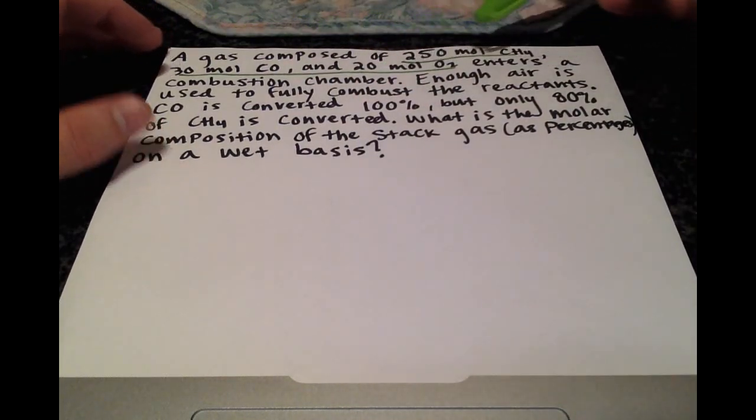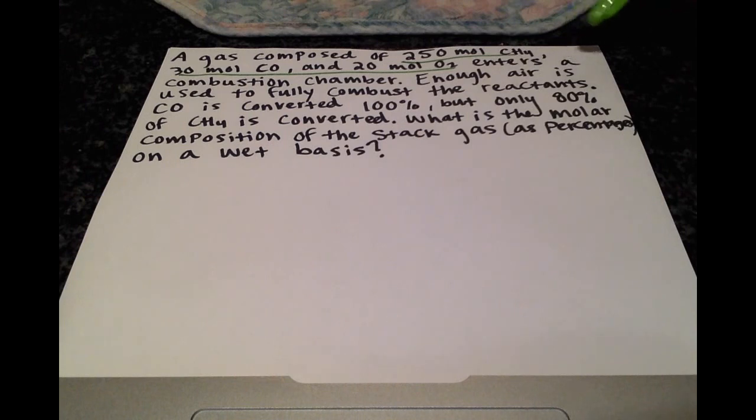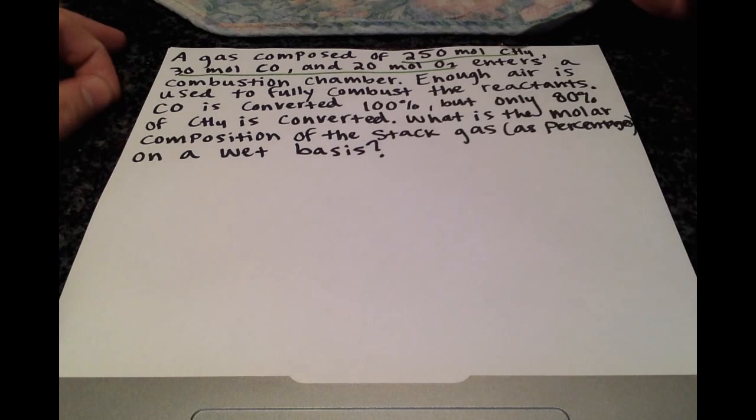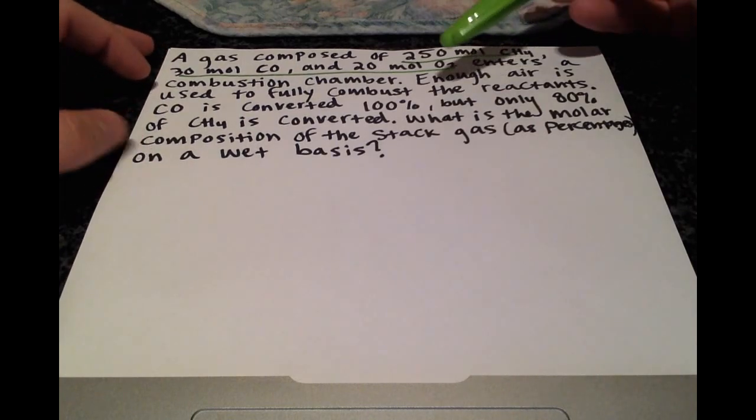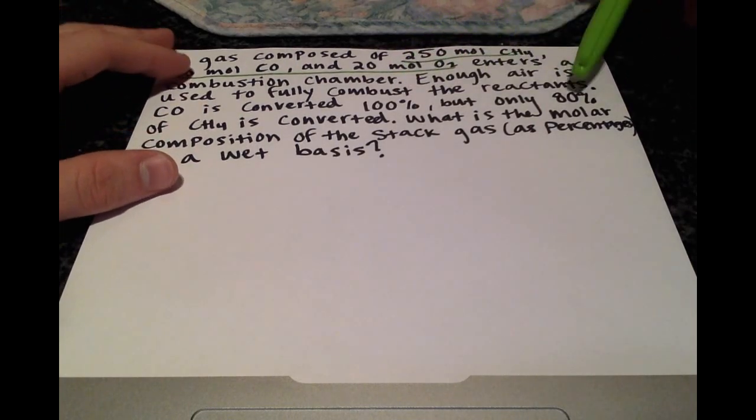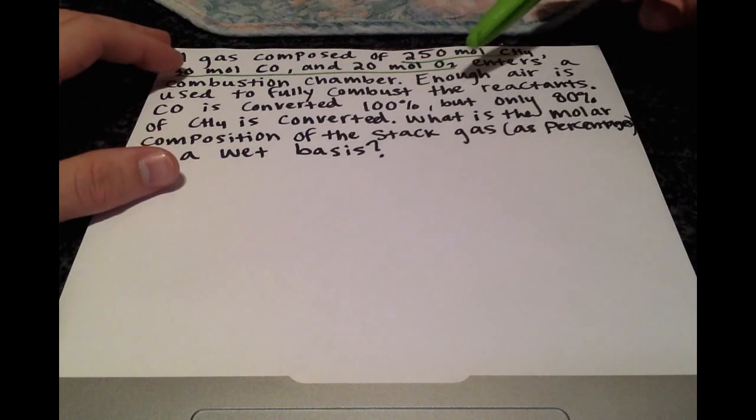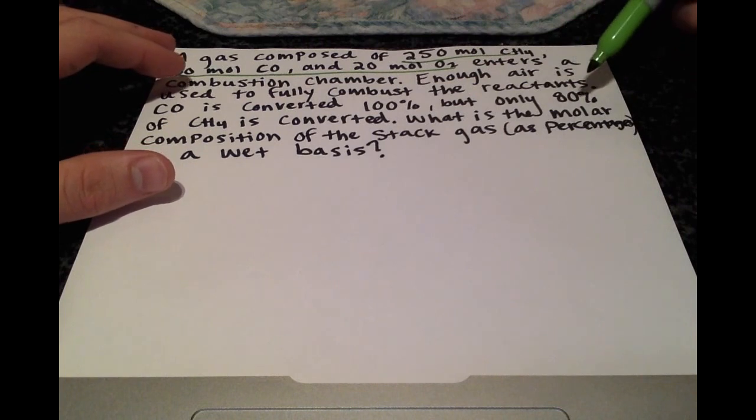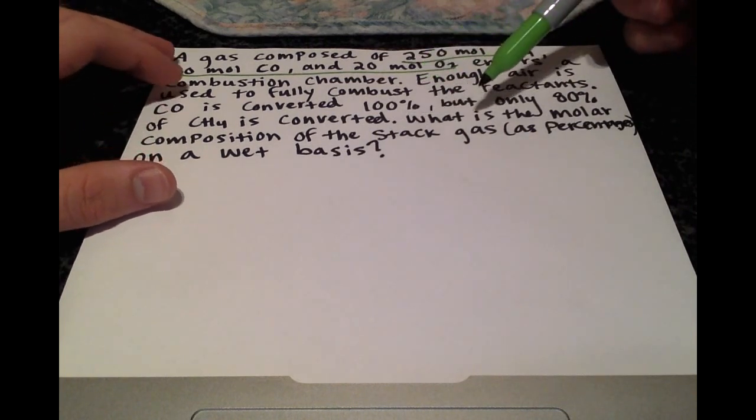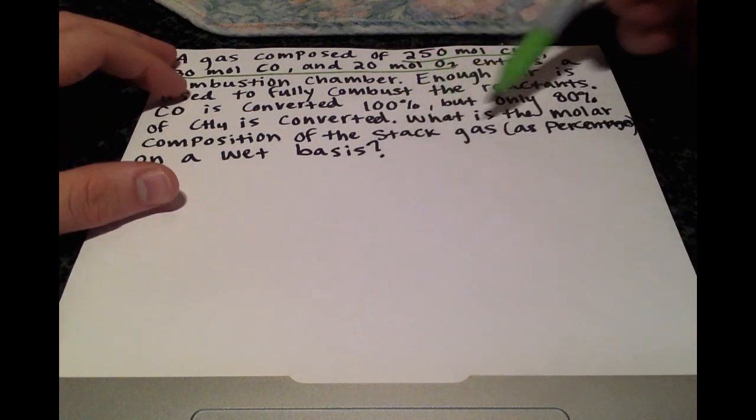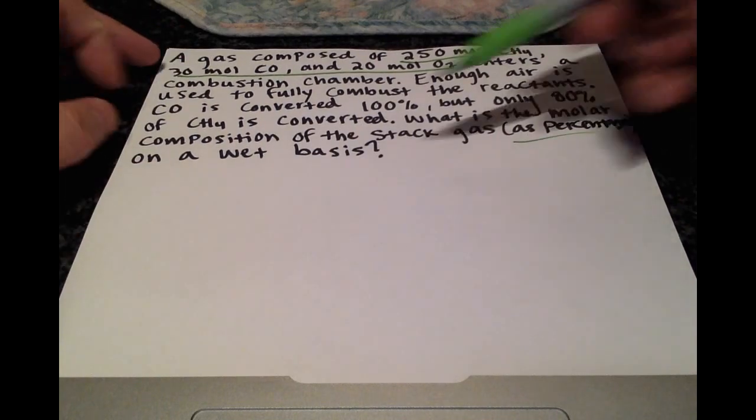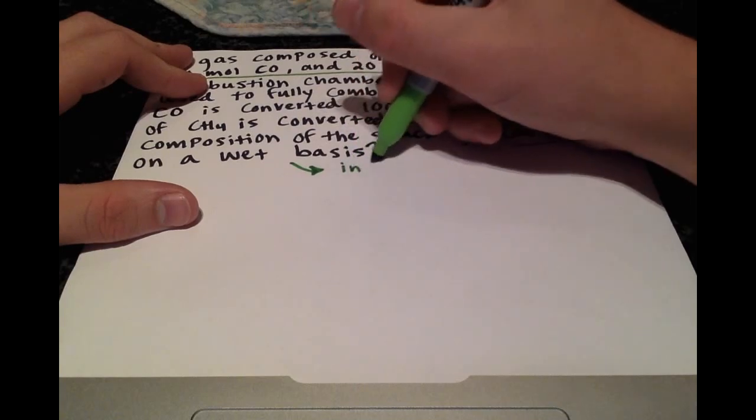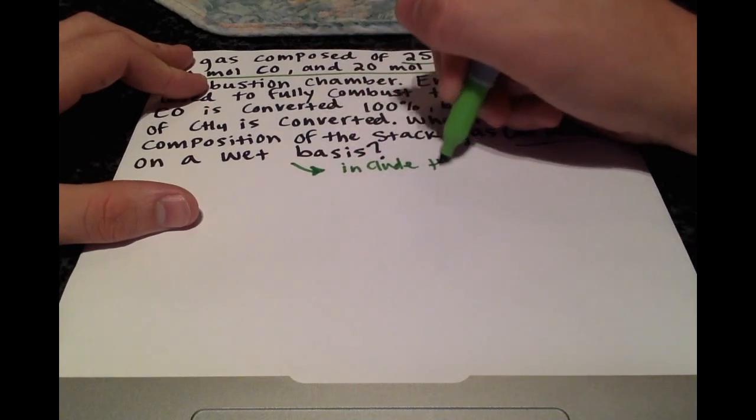It's entering a combustion chamber with enough air to fully combust these reactants. We're told that carbon monoxide is converted 100% but only 80% of methane is converted. We need to find the molar composition of the stack gas as percentages on a wet basis, which means include H2O.